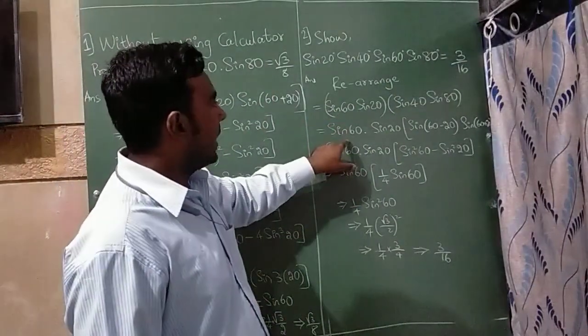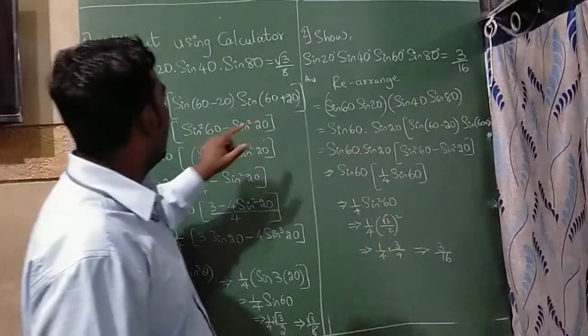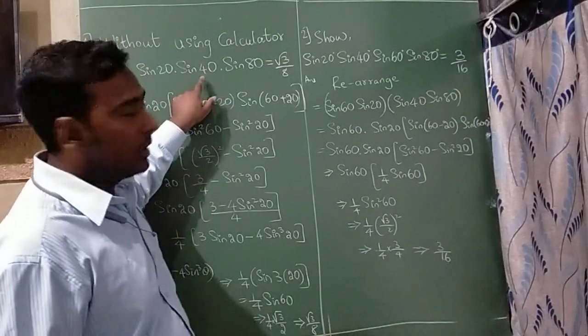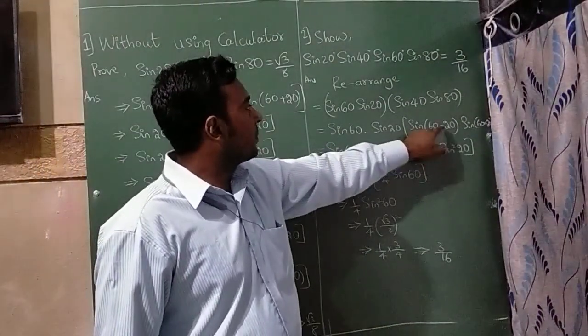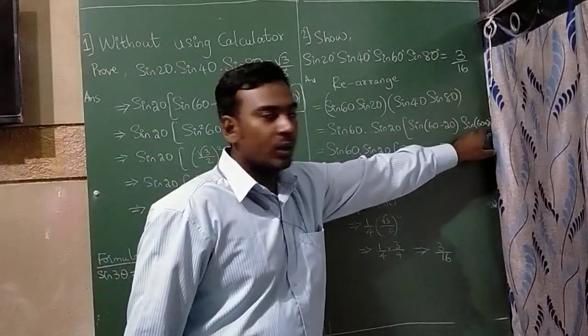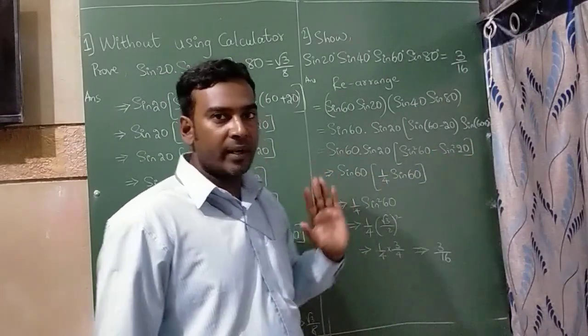So sin 60, I have written as it is, sin 20, I have written as it is, sin 40 and sin 80, I have solved like previous sum, sin 60 minus 20, I have written here, then 60 plus 20, so it will become sin square 60 minus sin square 20 degree.